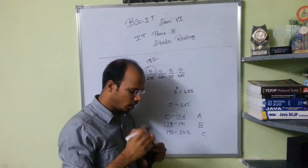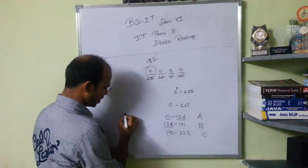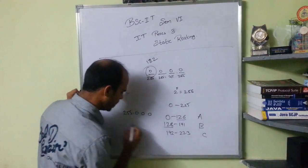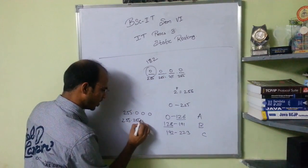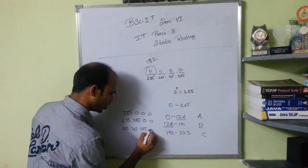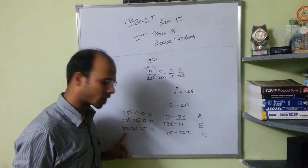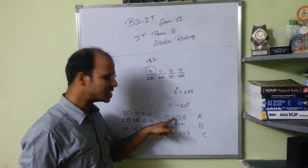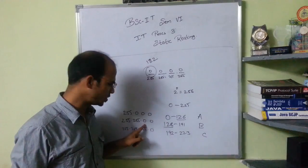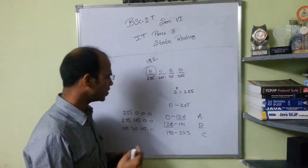Every class has a default subnet mask. The default mask for Class A is 255.0.0.0. The default mask for Class B is 255.255.0.0. For Class C it is 255.255.255.0. You have to remember all these subnet masks — depending on the class, you define the subnet mask.